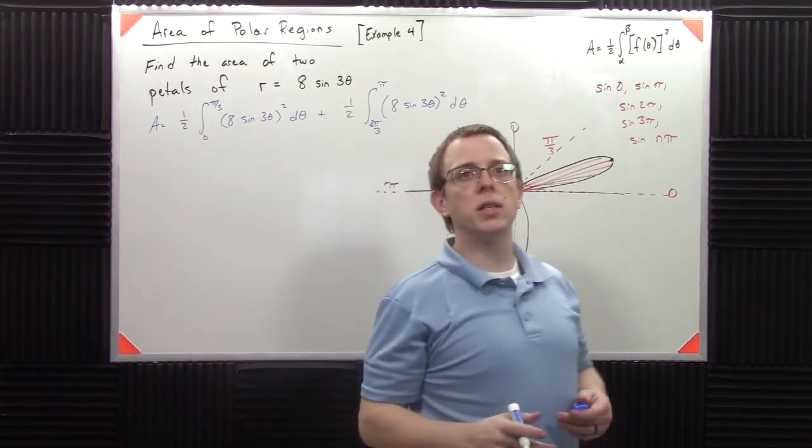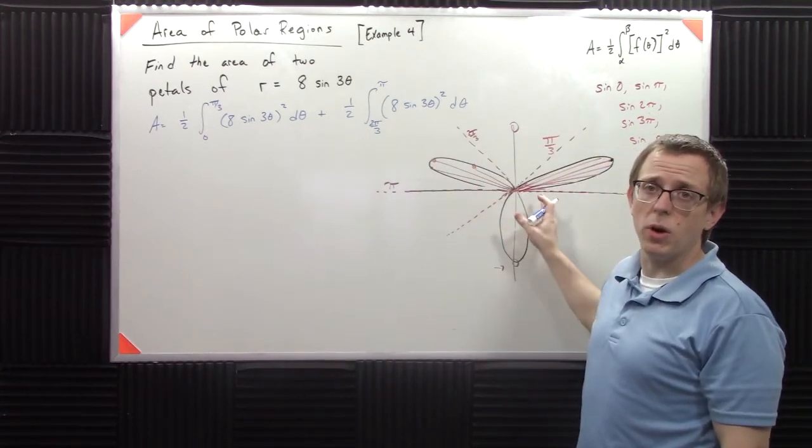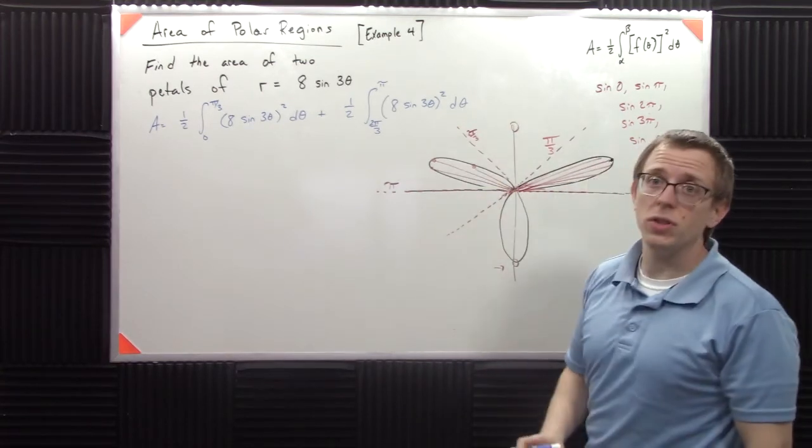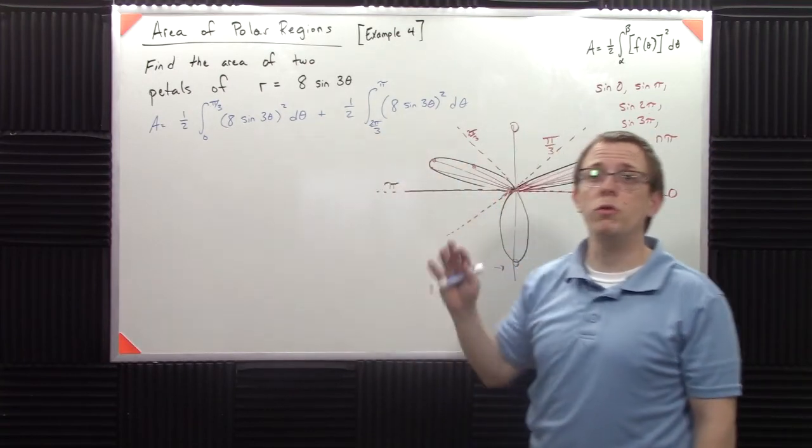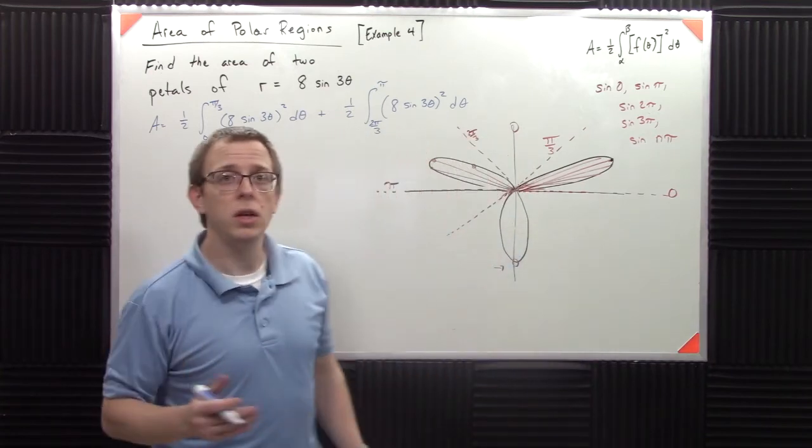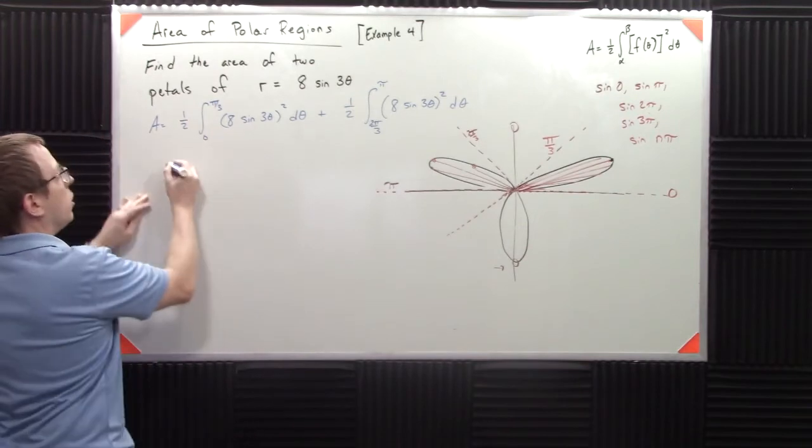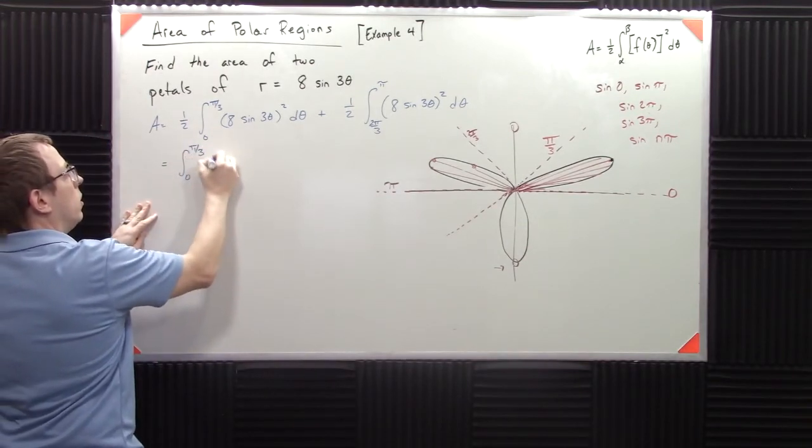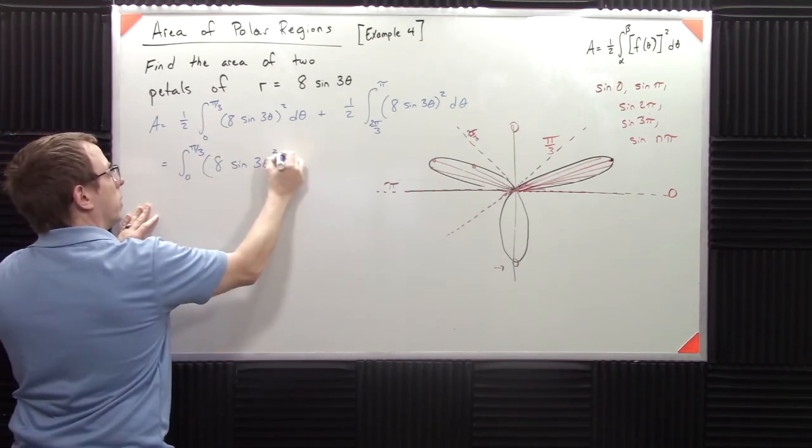The second thing is to realize that, now this graph may not be able to tell you that because this graph is poorly drawn, but in the actual case, this and this are the same. Now feel free to work these out separately and prove to yourself that they are in fact the same. But I'm going to operate under the assumption that you trust me here. So instead of doing both of these, I'm going to double this one and just say that it's double the area like that.